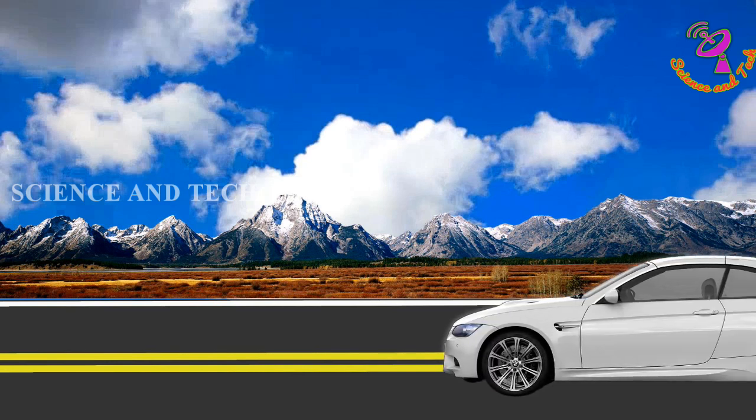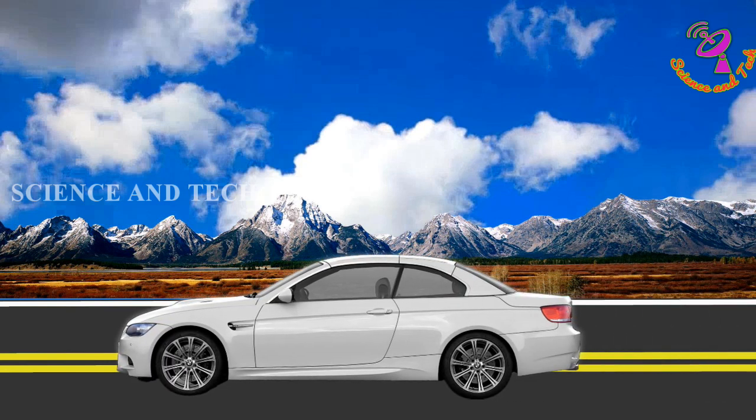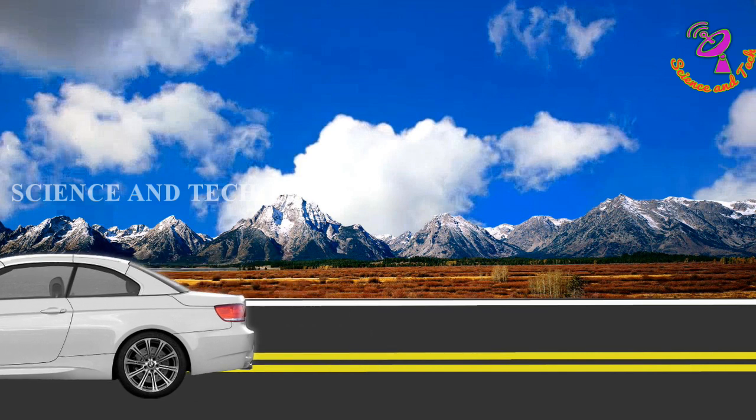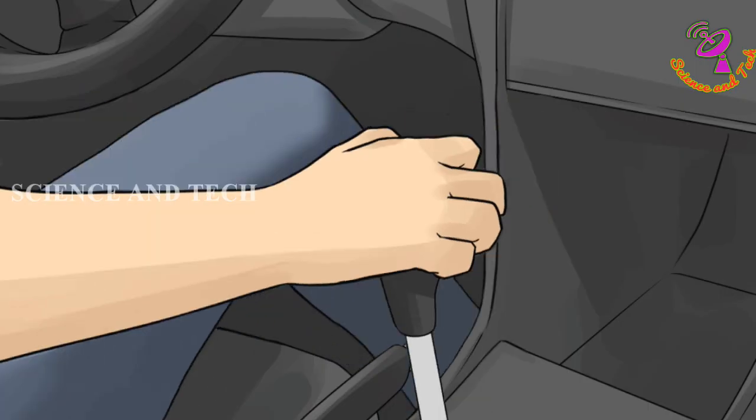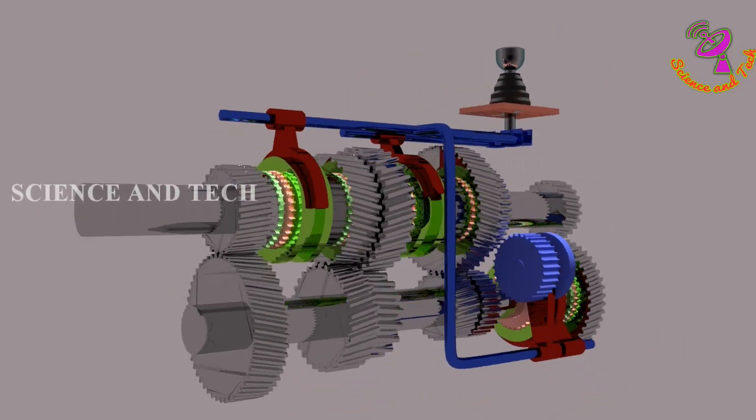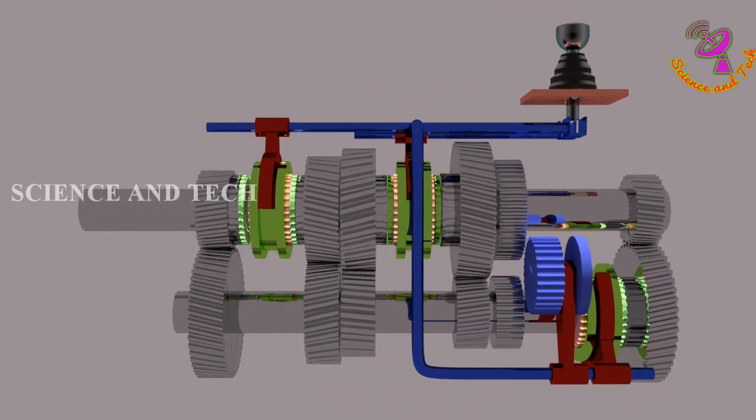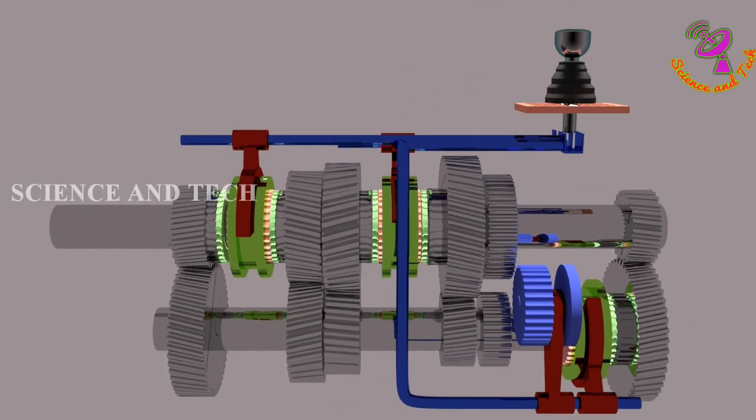Manual transmission is widely used in all transport vehicles. It's used to increase and decrease speed of the vehicle and climb in slope path or mountain. Today we are going to see about structure and working principle of manual transmission gears.